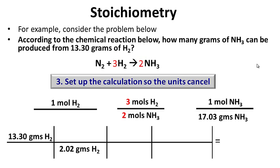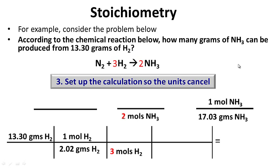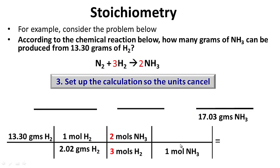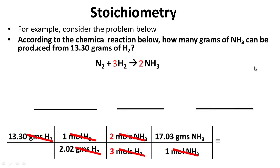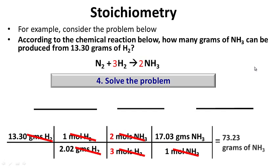2.02 grams of H2 is to one mole of H2. I have moles here, so I need moles down here. Three moles of H2 is to two moles of NH3 — our mole ratio. And finally, one mole of NH3 has a mass of 17.03 grams of ammonia. Our units now cancel, and we can solve the problem. By canceling our units, we arrive at the correct answer: 73.23 grams of NH3.